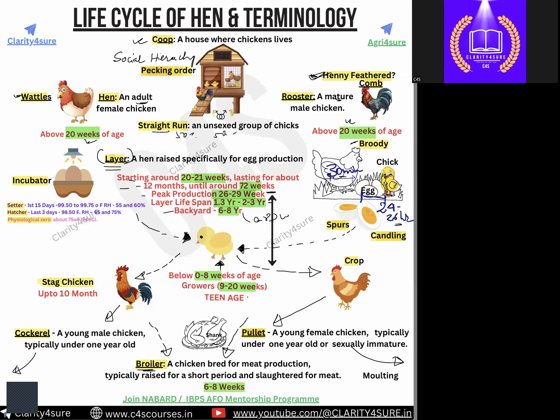For the setter, the temperature is around 99.5 to 99.75 degrees Fahrenheit and relative humidity is 55 to 67%. For the hatcher, the temperature is 98.5 degrees Fahrenheit and relative humidity is 65 to 75%. These factors are very important and are asked in the examination.